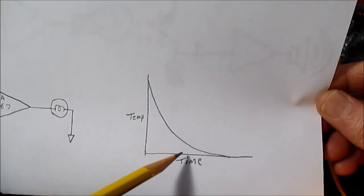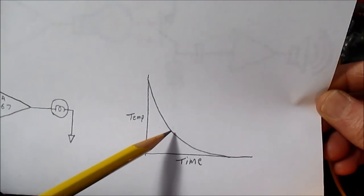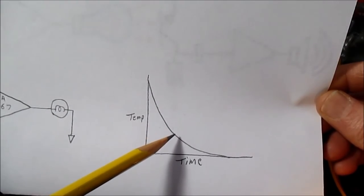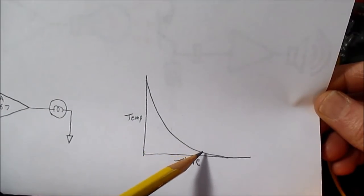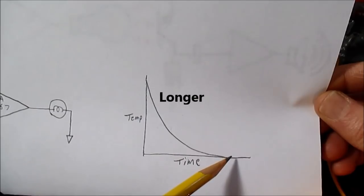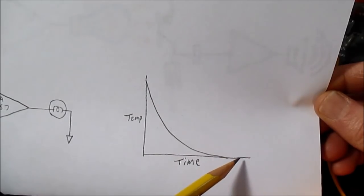And as time progresses, it's going to cool off and that delta T is not going to be as much. So the decay time will get slower and slower and eventually it will reach ambient temperature.